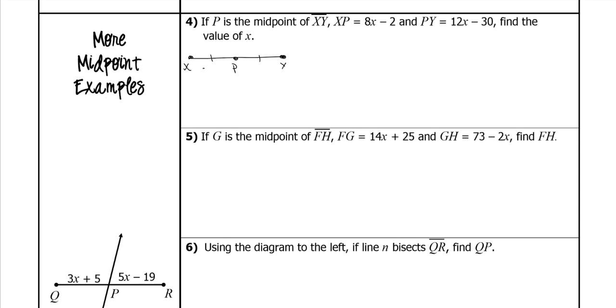XP is 8x minus 2 and PY is 12x minus 30. Find the value of x. Well, I told you that these are congruent, meaning that they're the same, so we're going to set them equal to each other. So 8x minus 2 equals 12x minus 30.